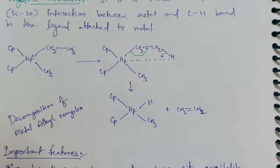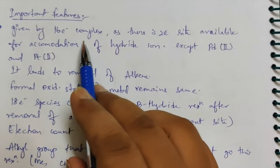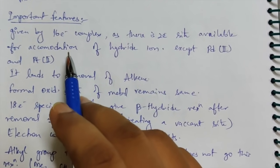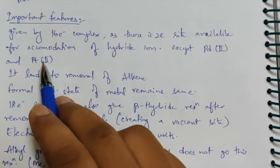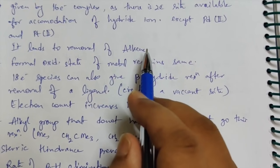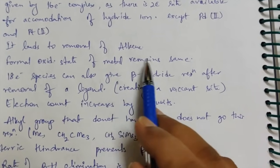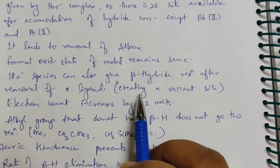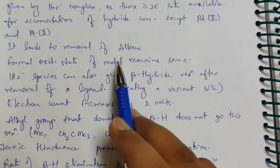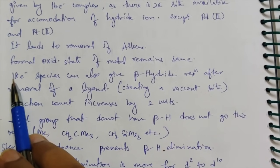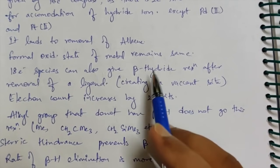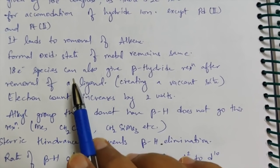The important features of agostic interaction: it is given by 16-electron complexes since there are two electrons available for accommodation of the hydride ion — except palladium(II) and platinum(II). It leads to removal of alkyne in a later step. The formal oxidation state of metal remains the same during agostic interaction — there is no change in oxidation state. Remember, people get confused thinking they need to change the oxidation state of metal during agostic interaction, but this is not correct.